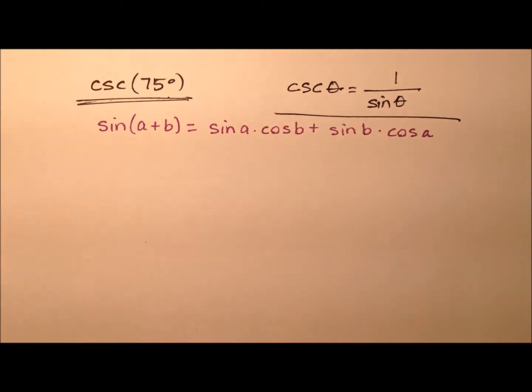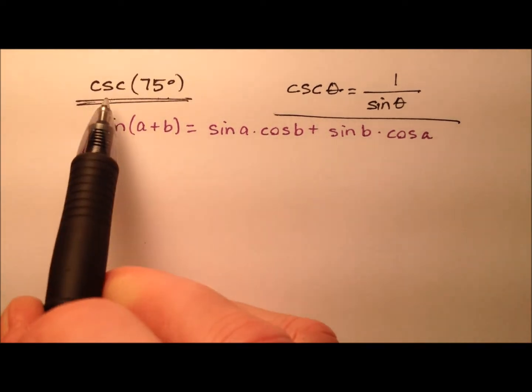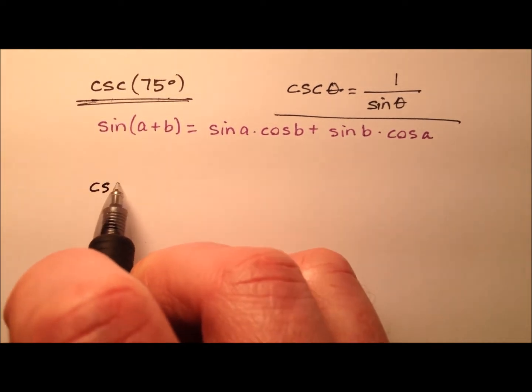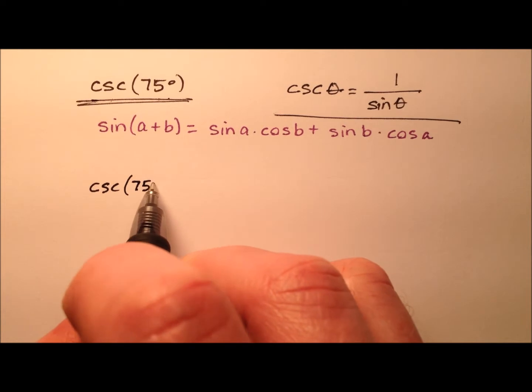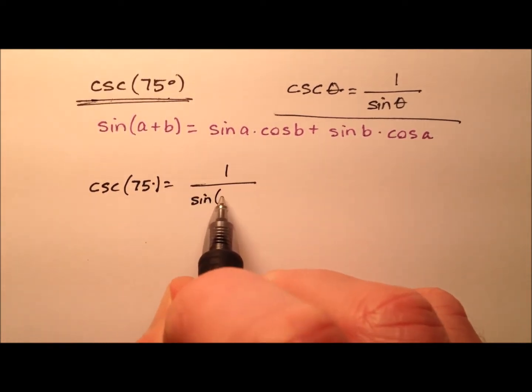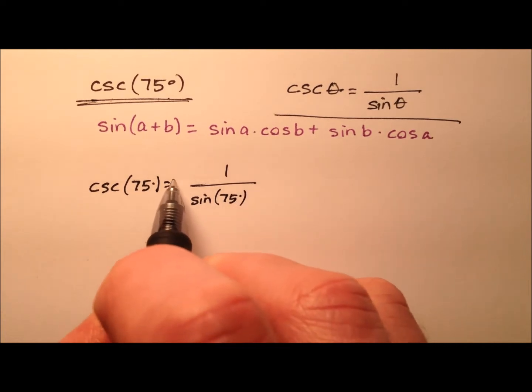We're going to use this relationship to find the exact value for the cosecant of 75 degrees. So we can say the cosecant of 75 degrees equals 1 over the sine of 75 degrees.